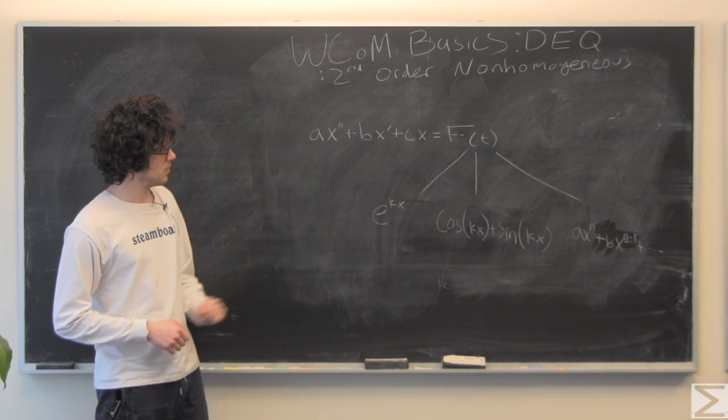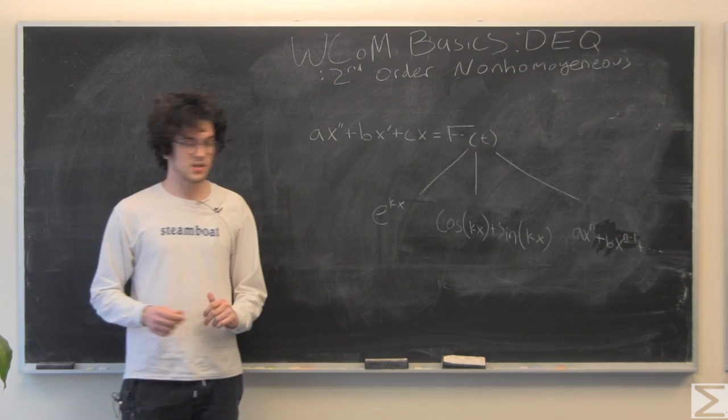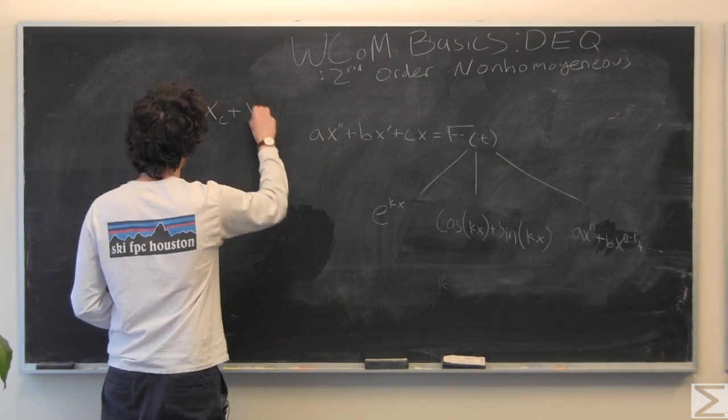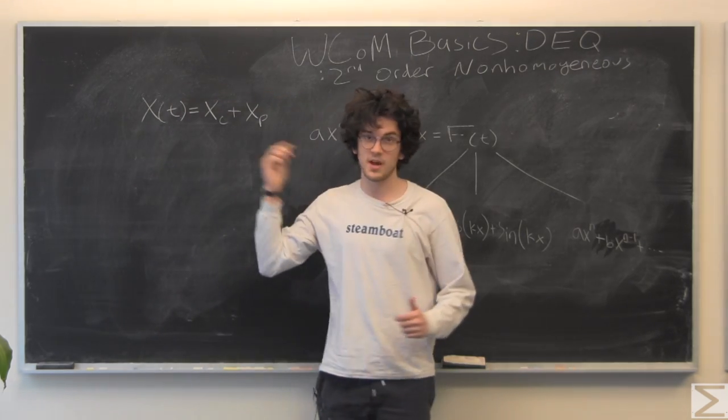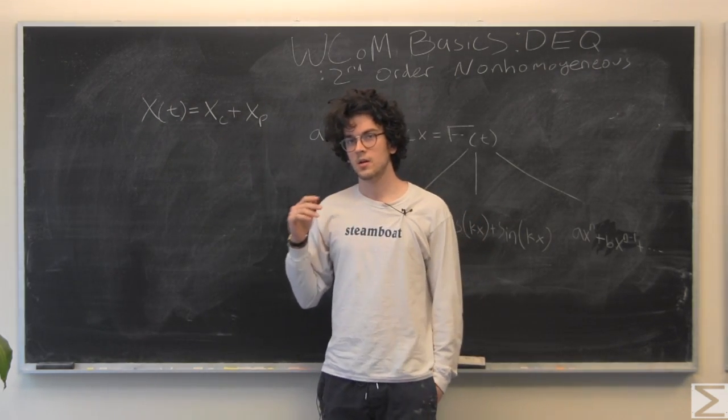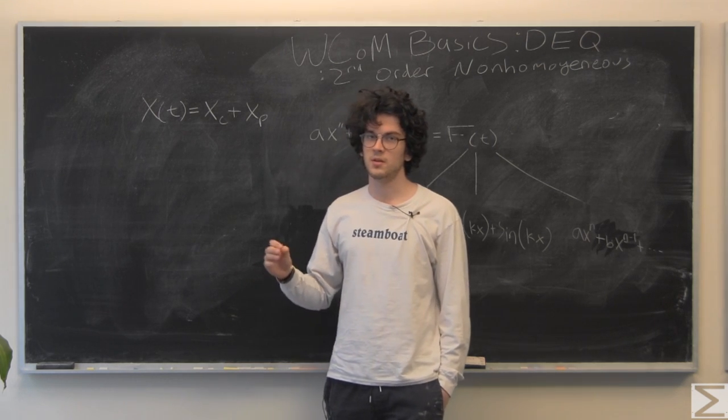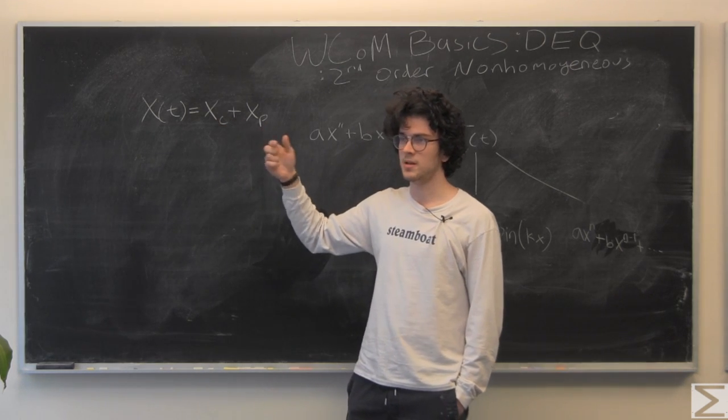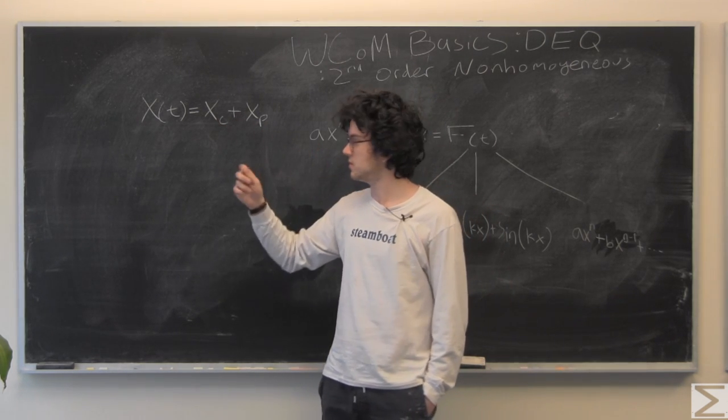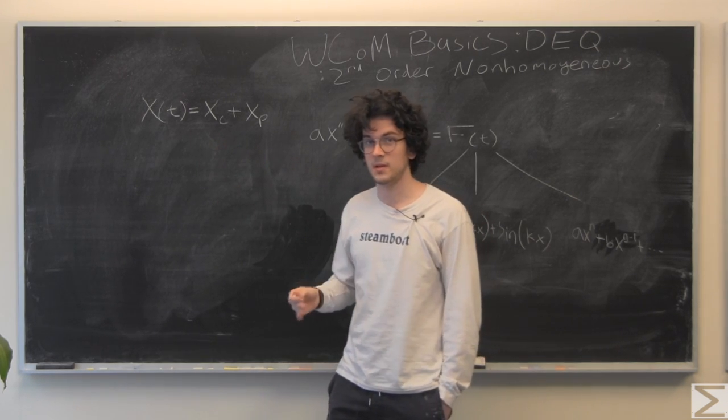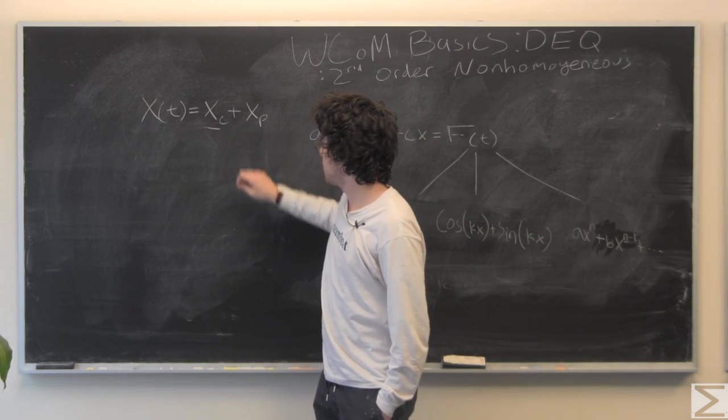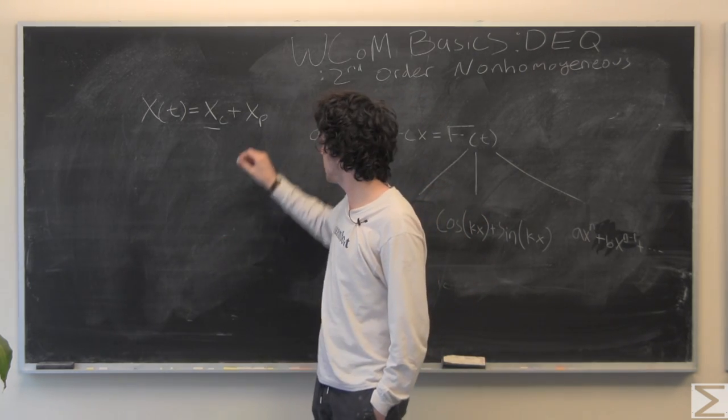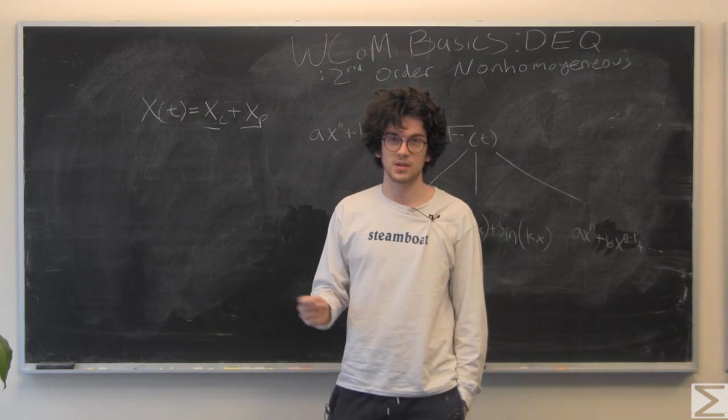Our solution x as a function of t is going to be a combination of two linearly independent solutions that we'll see how to get to in a minute. We have x sub c, which is the complementary solution, and we have x sub p, which is the particular solution.